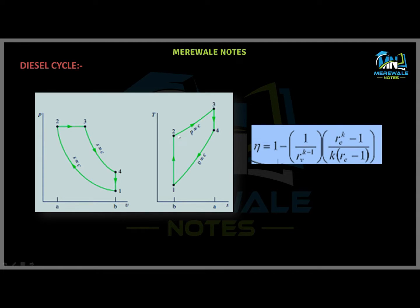So the main difference in the TS diagram is about the slope of the 2-3 curve. As we can see, at the constant pressure process, the slope of the 2-3 curve is less in comparison to the constant volume process at 4-1. The efficiency formula for the diesel cycle is: η = 1 − (1 / R^(k−1)) × (Rc^k − 1) / (k(Rc − 1)), where k is the ratio of specific heats, Rc is the cutoff ratio, and R is the compression ratio.